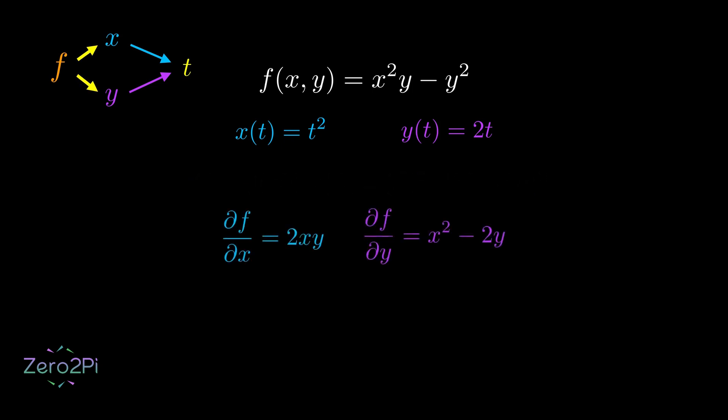First, we find the partials of f with respect to x and y. We do this by treating the other variable as a constant, just like before. Then, we find the derivatives of x and y with respect to t, which is straightforward.